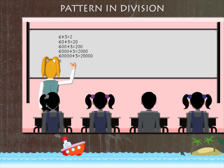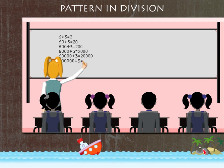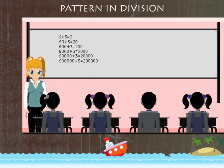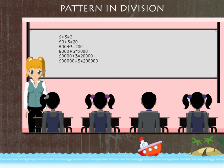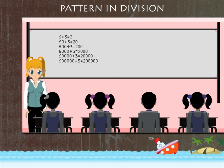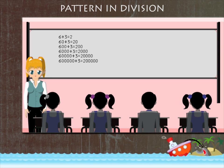If we add another zero to the dividend, the quotient will also have another zero provided the divisor remains the same. Teacher Nancy now reverses the pattern in descending order.